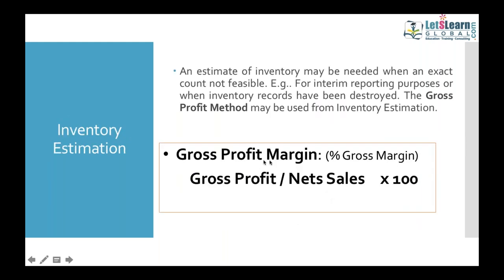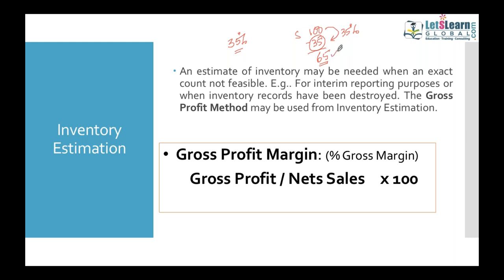Gross profit can also help calculate gross profit margin: gross profit over net sales times 100 gives you the percentage. For example, if gross profit is 35%, that means for every $100 of sales, we have a gross profit of $35. So your cost of goods sold is $65 — you are selling for $100, making a gross profit of $35.